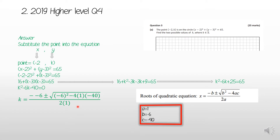Put the expression into the calculator using the plus first to find one value of k, then change to minus to find the other. Doing that gives two values: k = 10 and k = −4.